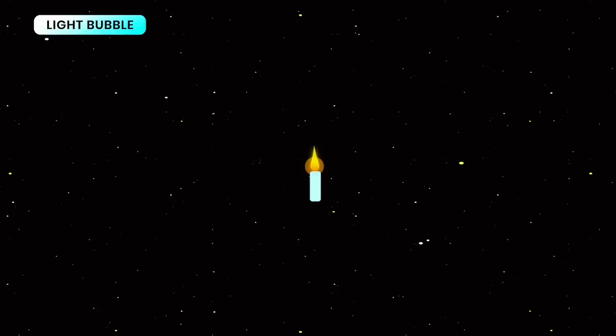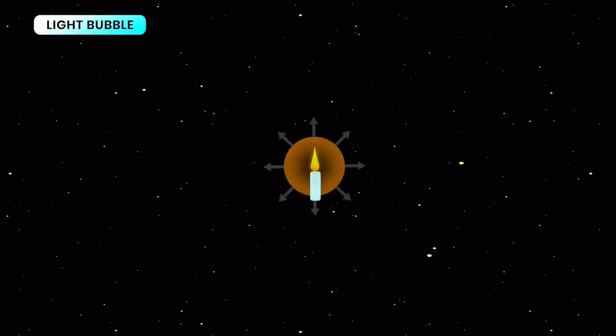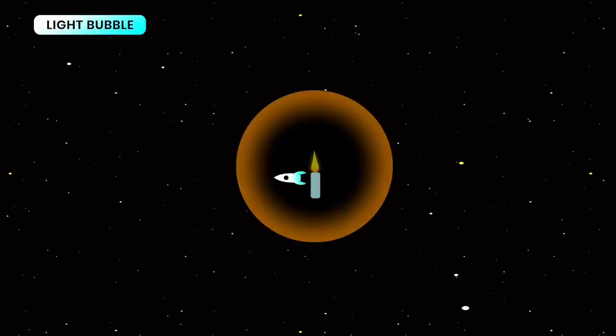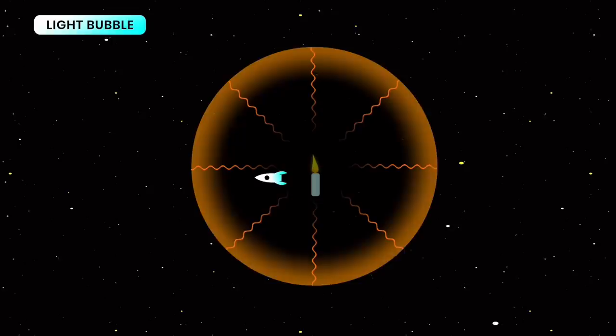We start with a light bubble. Switch on a light somewhere in three-dimensional space — the light will travel at the speed of light in all directions, creating a bubble structure extending 300,000 kilometers per second. You can never reach or overtake the bubble because it travels at the maximum speed possible in our universe. If you try to reach the edge of the bubble, you can't — you are trapped inside it.